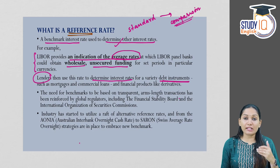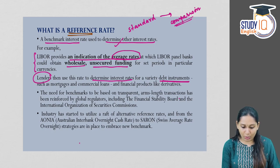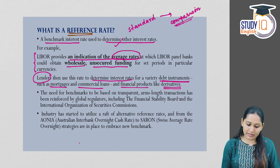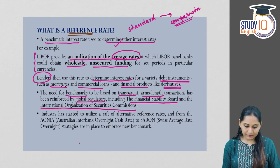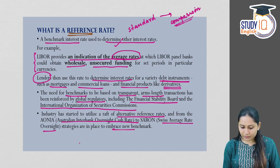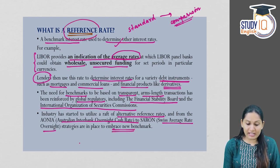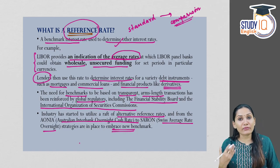Lenders — that is, financial institutions that lend money — can decide the interest rate on various debt instruments, not just interbank but also on mortgages, commercial loans, and financial products like derivatives. Global regulators, including the Financial Stability Board and the International Organization of Securities Commissions, have reinforced the need for benchmarks based on transparent arm's-length transactions. Alternative reference rates are being adopted, from Australian interbank overnight cash rate to Swiss average rate overnight, to embrace a new benchmark.